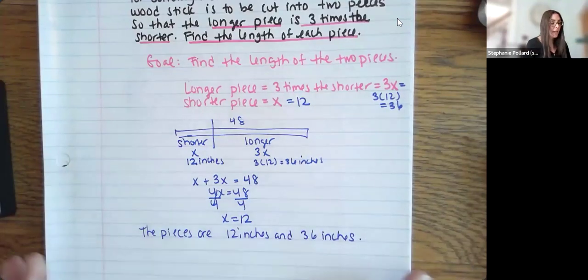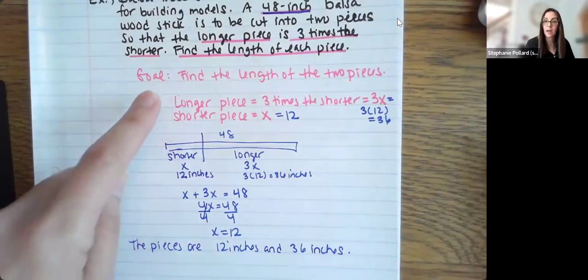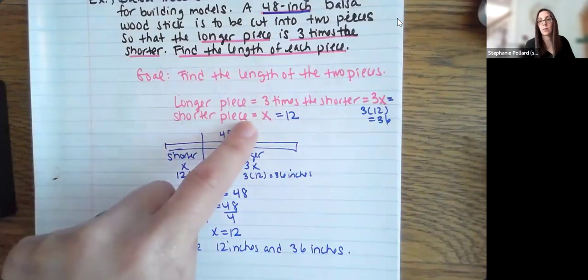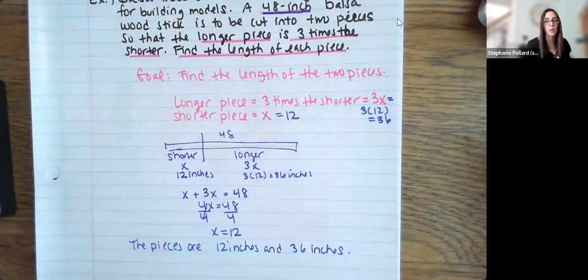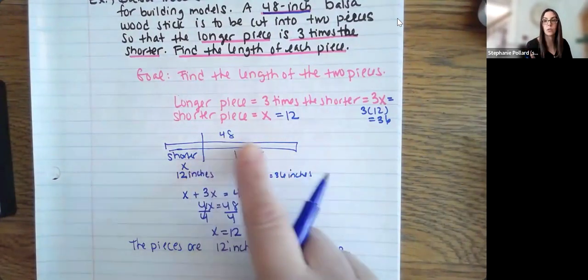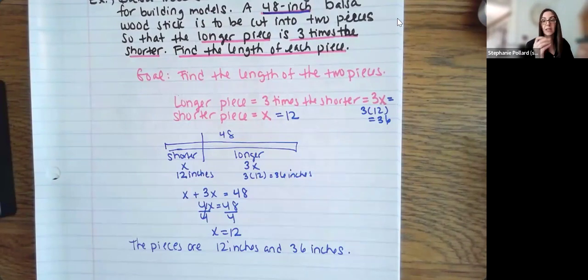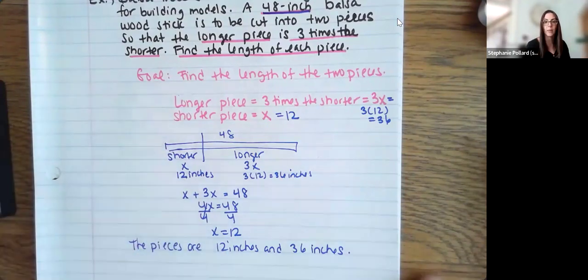The key thing here is I started by writing out some notes — what are the things I'm looking for, and defining which one is going to be my variable. A common mistake is that a lot of students would just write 3x equals 48 and forget to add in the extra x piece, because you need to combine both pieces together to get the total 48 inches. So really take your time, draw pictures, take notes, and think about what's going on.